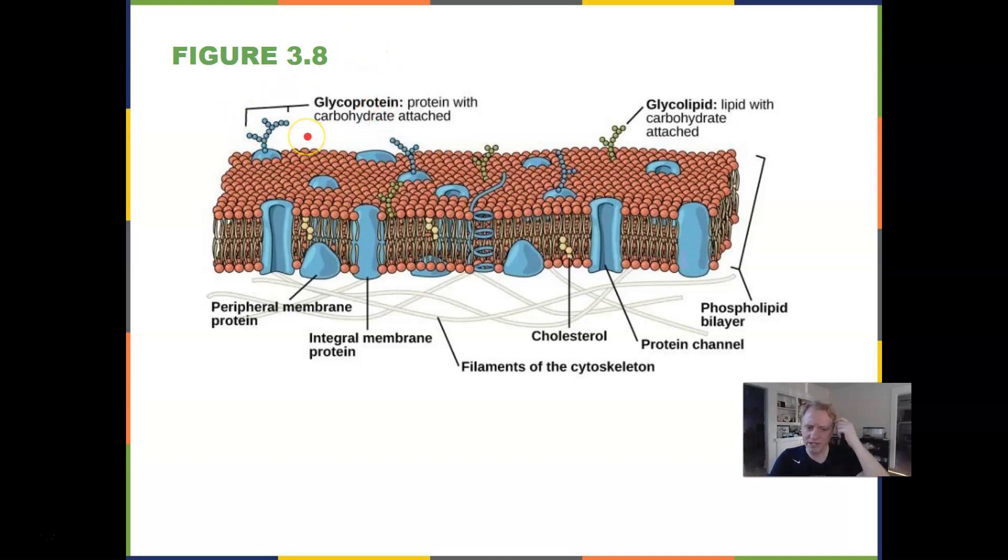It also has glycoproteins, which is, as the name would imply, a carbohydrate from the glyco part and protein from the protein part. Embedded within its cell membrane are glycolipids, which, again, glyco, like glucose, implying carbohydrate, glycolipid, carbohydrate, lipid. It has some cholesterol embedded within it. So these cell membranes have a lot of stuff going on within them.